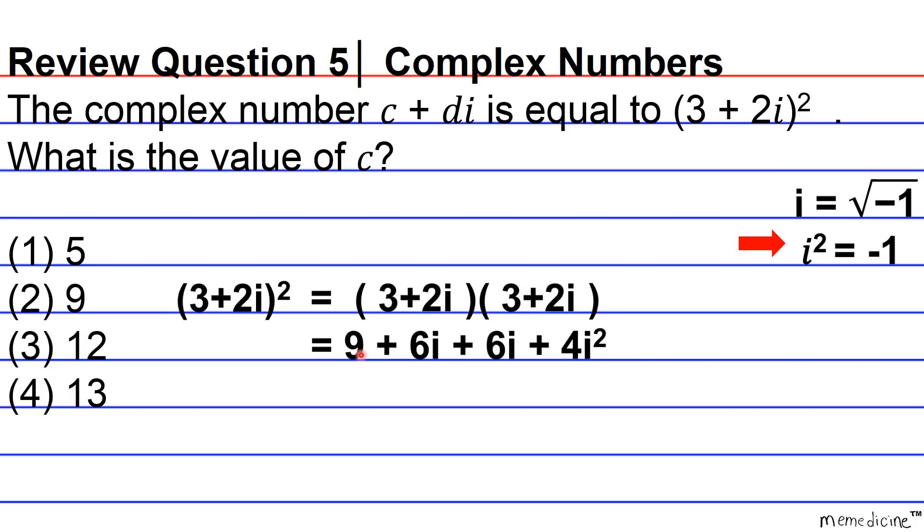3 times 3 is 9. 2i times 3 is 6i. Well actually, I think I did the wrong set. 3 times 2i is 6i, and this 2i times 3 is 6i.